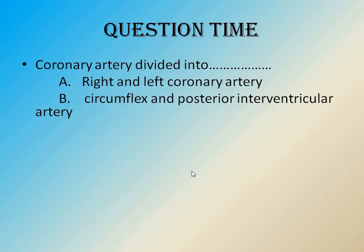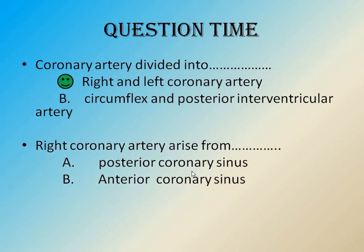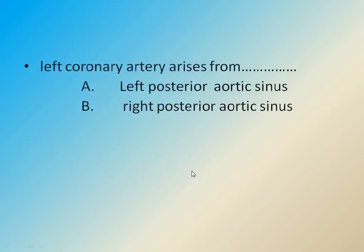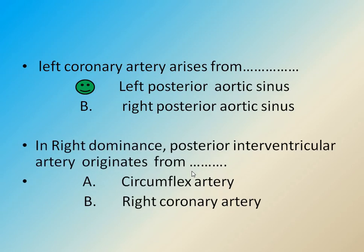Question time: The coronary artery is divided into — right coronary artery and left coronary artery. The right coronary artery arises from the anterior coronary sinus. The left coronary artery arises from the left posterior aortic sinus. In right dominance, the posterior interventricular artery arises from the right coronary artery.